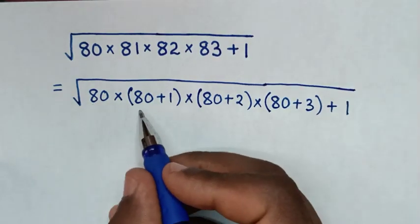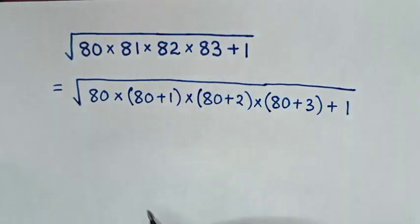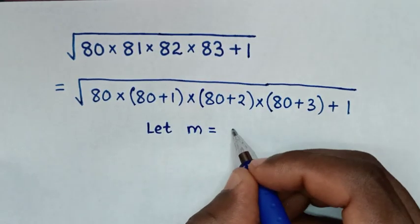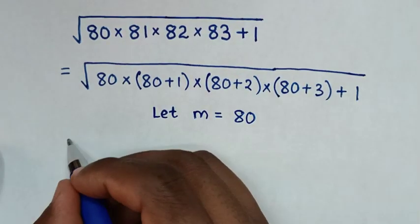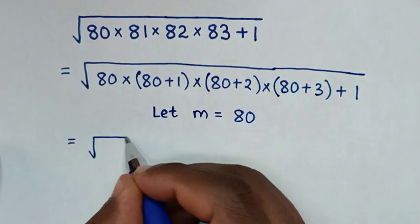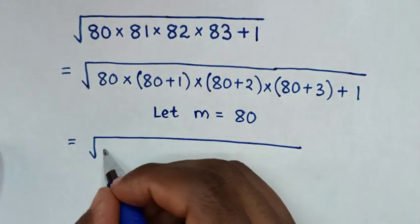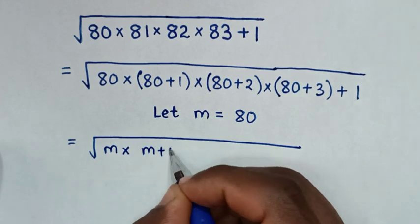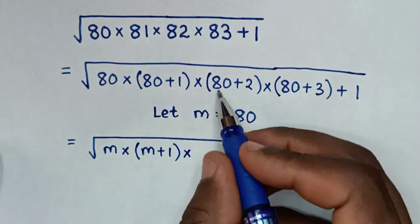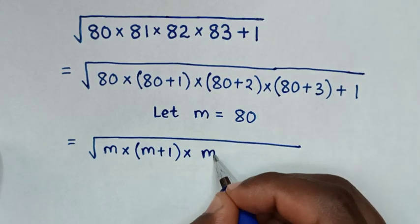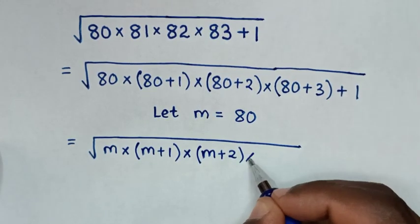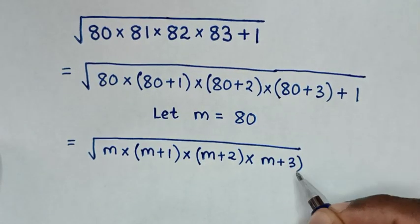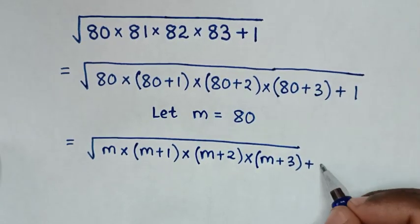In the next step, 80 is common, so we let m equal to 80. It will be equal to the square root of m times (m+1) times (m+2) times (m+3), then plus 1.